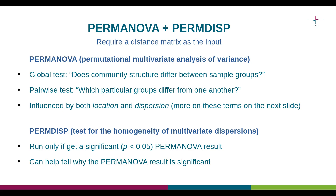The first two methods I will discuss are PERMANOVA and PERMDISP. Both are abbreviations, with PERMANOVA standing for Permutational Multivariate Analysis of Variance and PERMDISP meaning a test for the homogeneity of multivariate dispersions. Hopefully by the end of this video, concepts such as multivariate dispersion will feel more familiar.